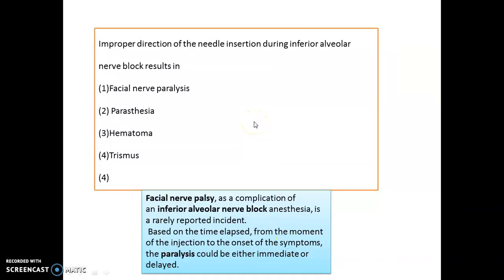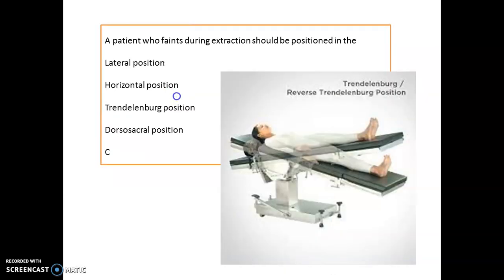What happens with improper direction of the needle during inferior alveolar nerve block? The correct answer is trismus. Facial nerve palsy can also be seen but is a rarely reported incident. A patient in pain during extraction should be positioned in the Trendelenburg position.